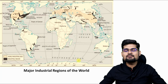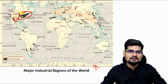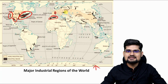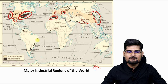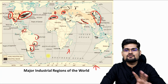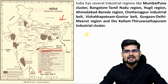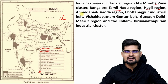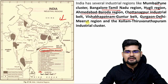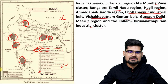Now come the major industrial regions in the world. If you observe the map, you can find areas on the East Coast and the Great Lakes part of the US, on the West Coast as well, the Mediterranean area, parts of Europe, India, Southeast Asia, and some places in South America. In India, there are 8 major industrial regions: Mumbai-Pune cluster, Bangalore-Tamil Nadu region, Kogli region, Ahmedabad-Baroda region, Chhota Nagpur industrial region, Visakhapatnam-Guntur, Gurgaon-Delhi-Meerut region and Kollam-Thiruvananthapuram. Including minor ones, there are 13 in total.